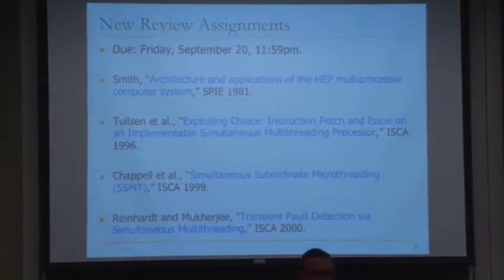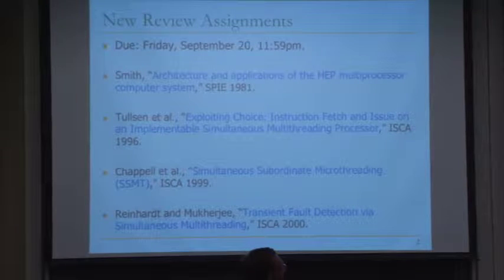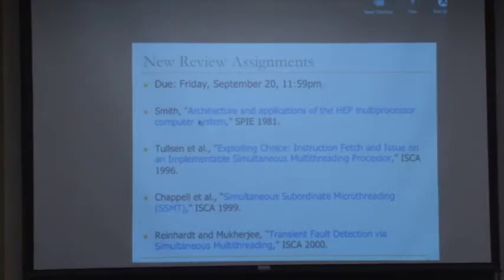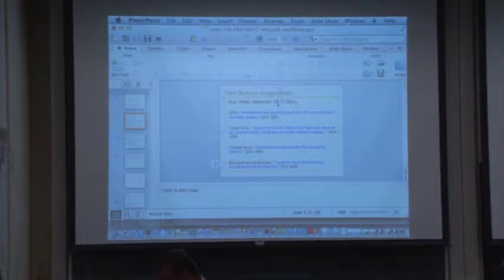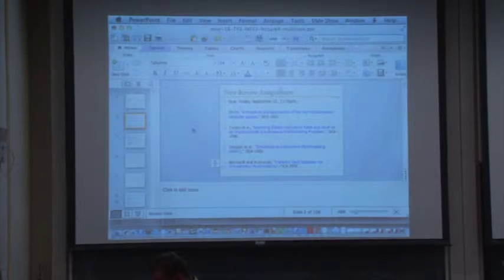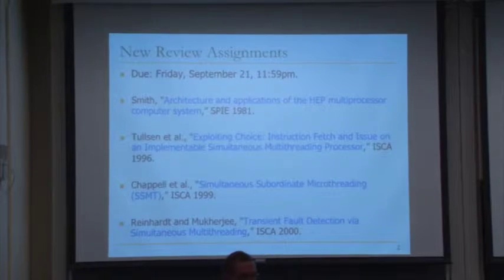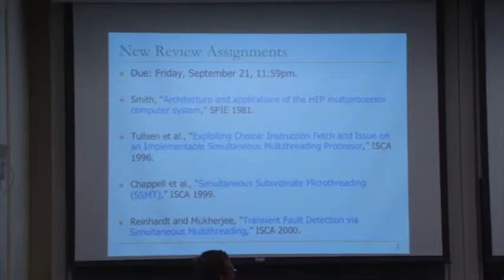This time the review assignment is on multithreading. The September 20 date needs to be fixed to September 21. The instructor is batching reviews — instead of two per class, there will be four for the entire week. These are interesting papers.